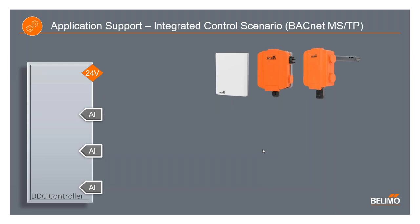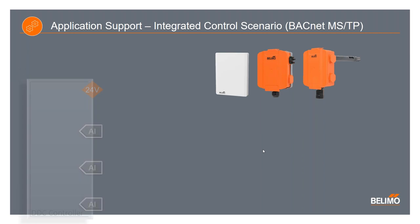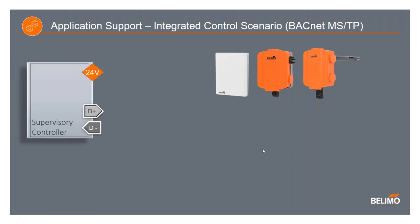Moving into a BACnet integrated control scenario. With BACnet MSTP, we replace the multiple physical inputs on the DDC controller with a single MSTP connection. On the device side, each device daisy chains to the next closest sensor, and each device could have multiple data points with still only one physical network connection at the controller. The first sensor could be an IAQ room sensor, which would output a multitude of points such as temperature, relative humidity, CO2, and dew point. The second sensor is a differential pressure sensor with true auto zero, which with BACnet or Modbus functionality would also be able to report volumetric flow.